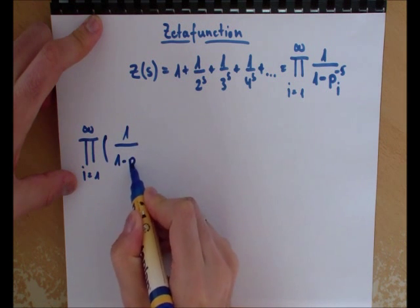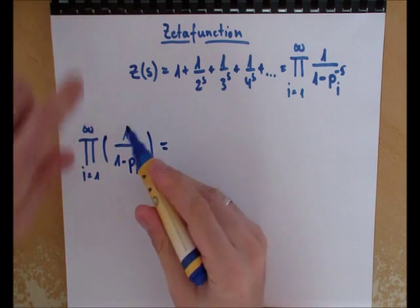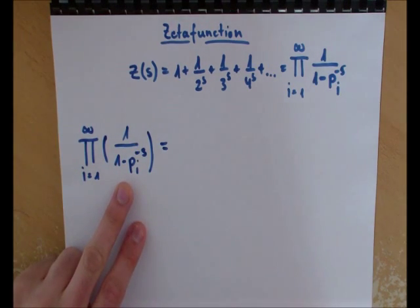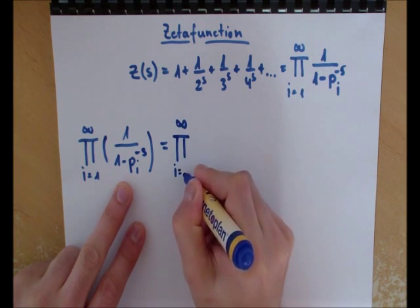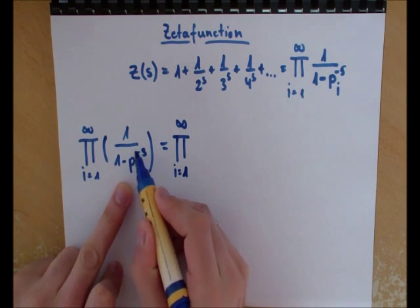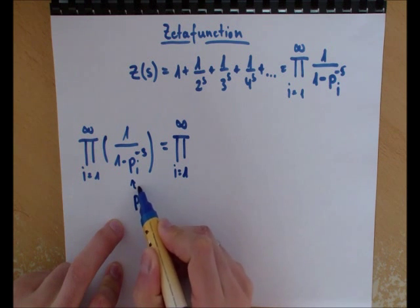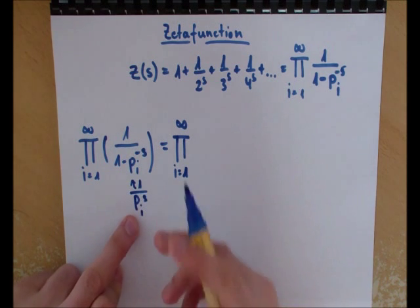I will start off with this product. What he used was the geometric series. The geometric series can be used here because I will rewrite this as 1/(p_i^s), and p_i is always greater than or equal to 2.